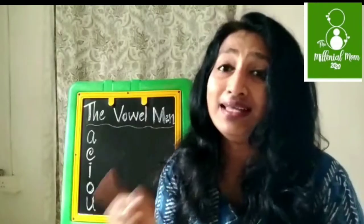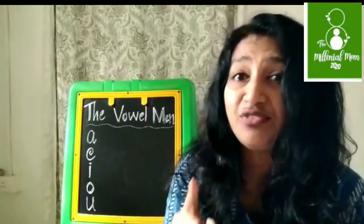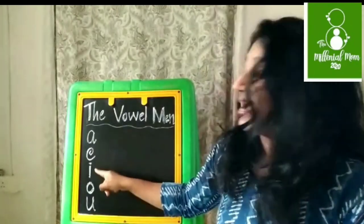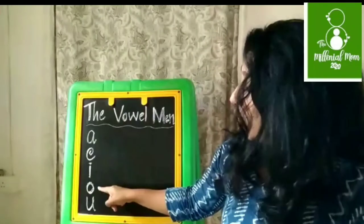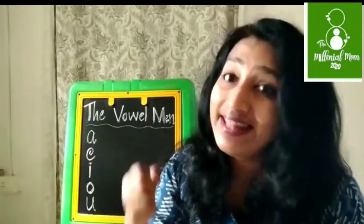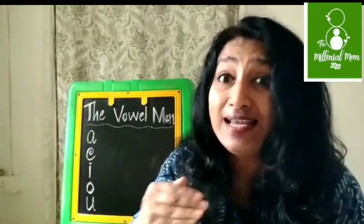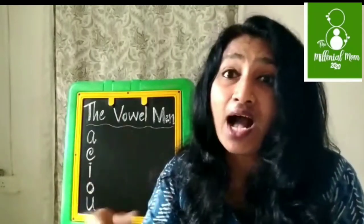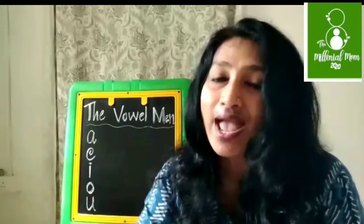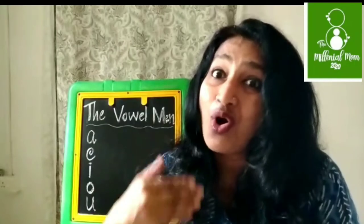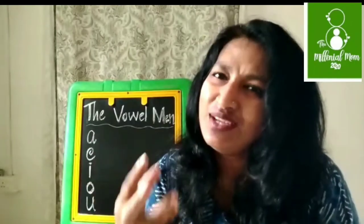All of us know that the vowels in the English alphabet are A, E, I, O, U. We have learned this when we were little children, and this is what we teach our little children also. There are five vowels and they are A, E, I, O, U — and it stops there. We do not know much more about these, and we do not actually care to know much more.